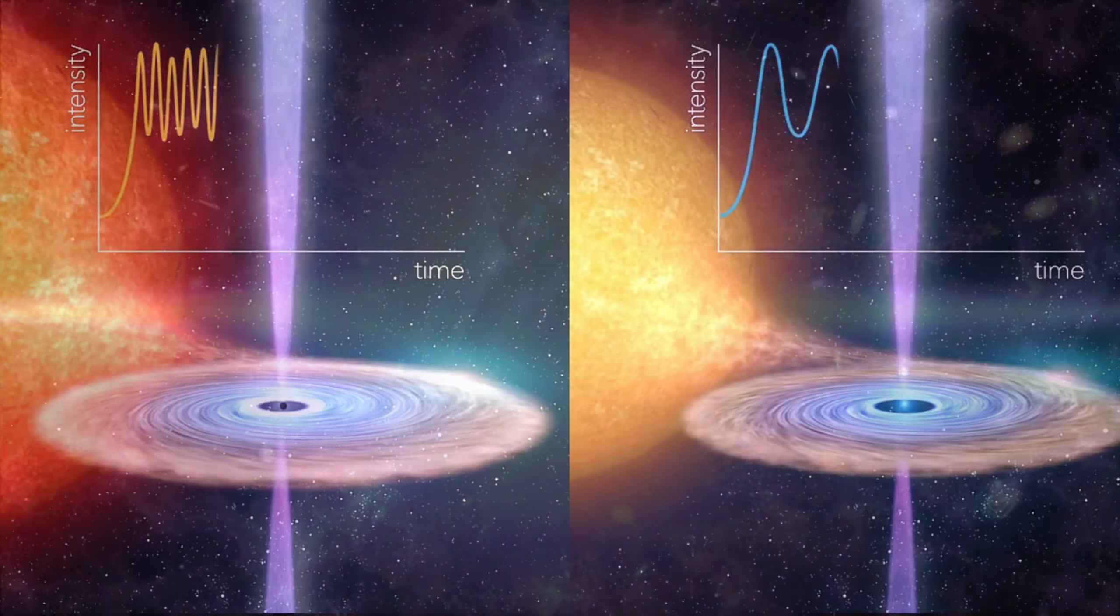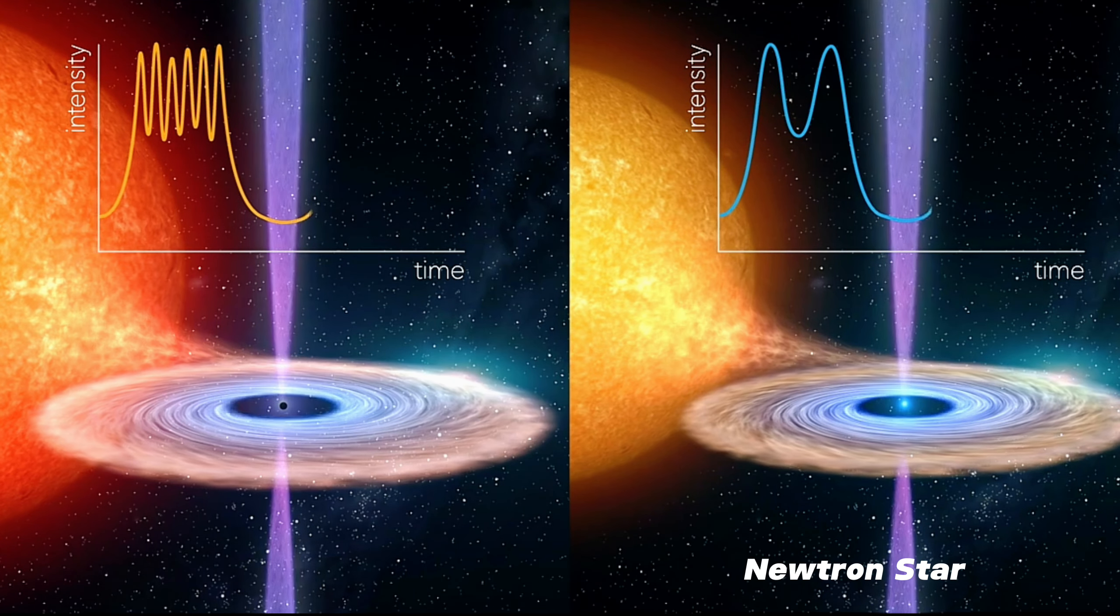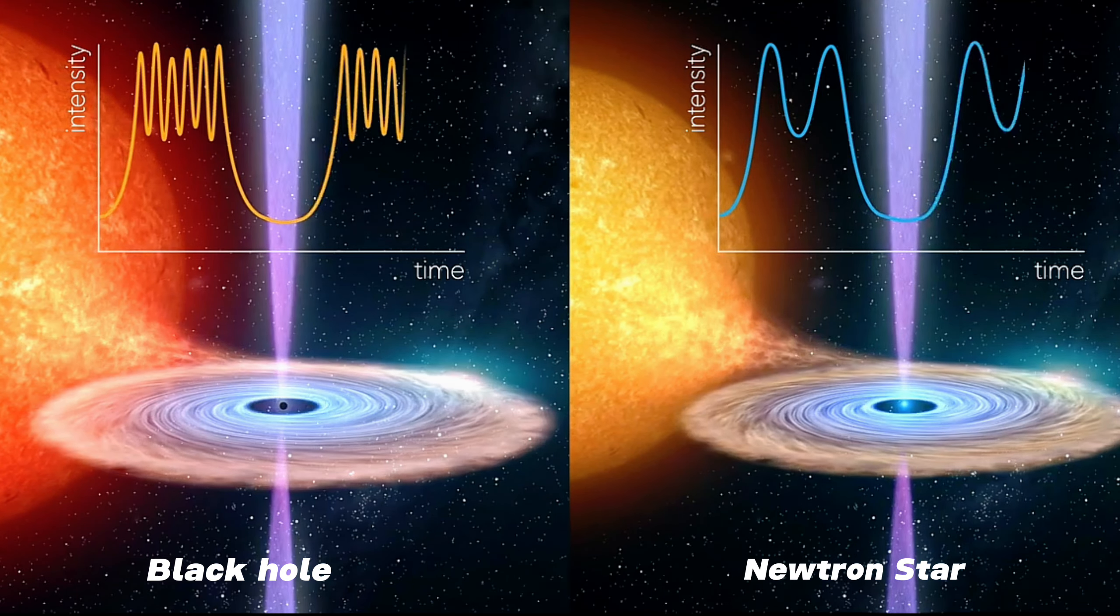As the stars die in a supernova explosion, they either turn into a neutron star or a black hole, depending on the mass of the star.